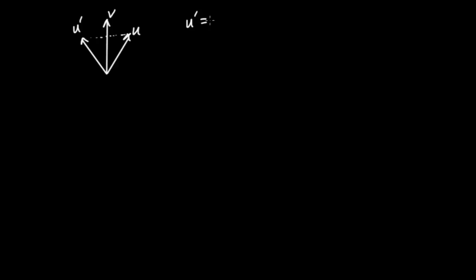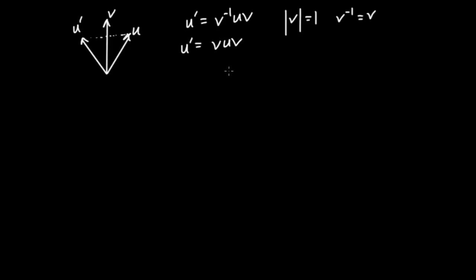Let's first review how to reflect vectors through other vectors. Suppose I have some vector u and another vector v, and I want to reflect u through v. This consists of taking the rejected part, negating it, and adding it to the projected part to form the newly reflected vector u prime. We derived the formula for how to calculate this: u prime is equal to v inverse times u times v.